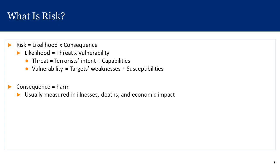When we think about threat and vulnerability, with intentional events such as a terrorist attack, we're thinking about the intent of the perpetrator and the capabilities of that person or group. For vulnerability, we're referring to the weaknesses and susceptibilities of the target. The consequence is defined as the harm, usually measured in illnesses, deaths, and economic impact.